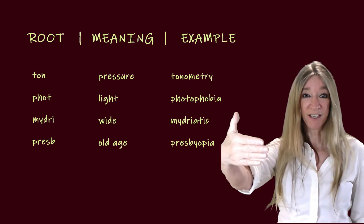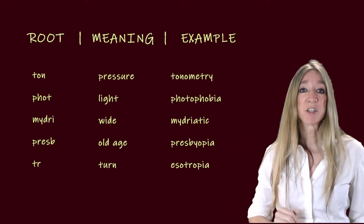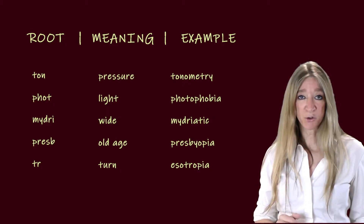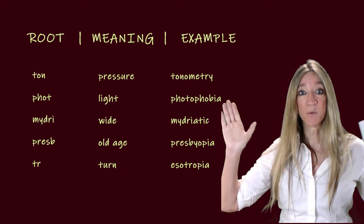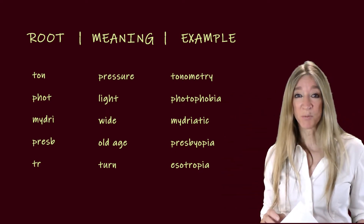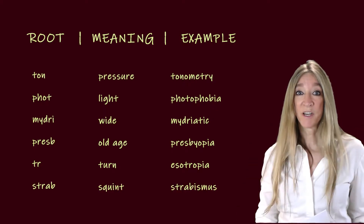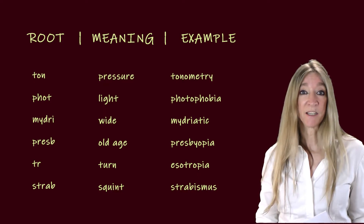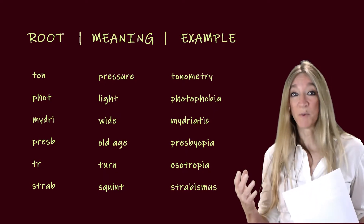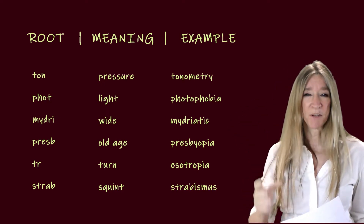Presbyopia is basically farsightedness caused by the loss of elasticity of the lens. The next root, tr, meaning turn. Esotropia is the condition in which the eyes are turned in — cross-eyed. And exotropia would be a condition in which the eyeballs turn out, the pupils turn outwards. The next root, strab, meaning squint — strabismus is squinting. This is what we do when one eye can't focus with the other because of the imbalance of the eye muscles.